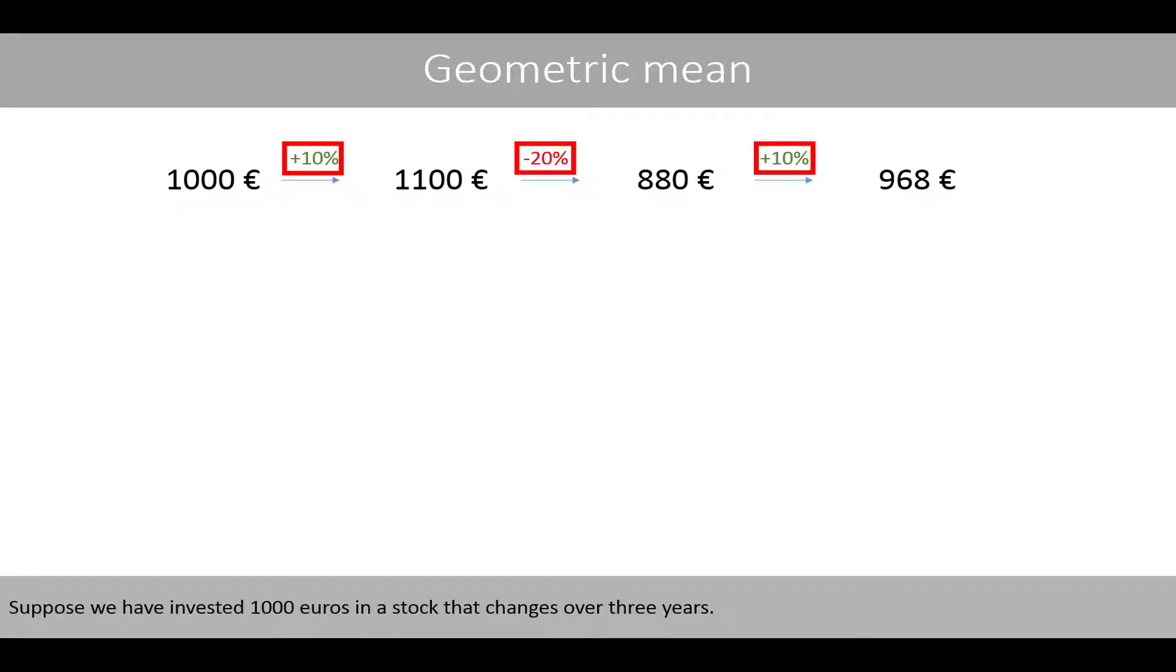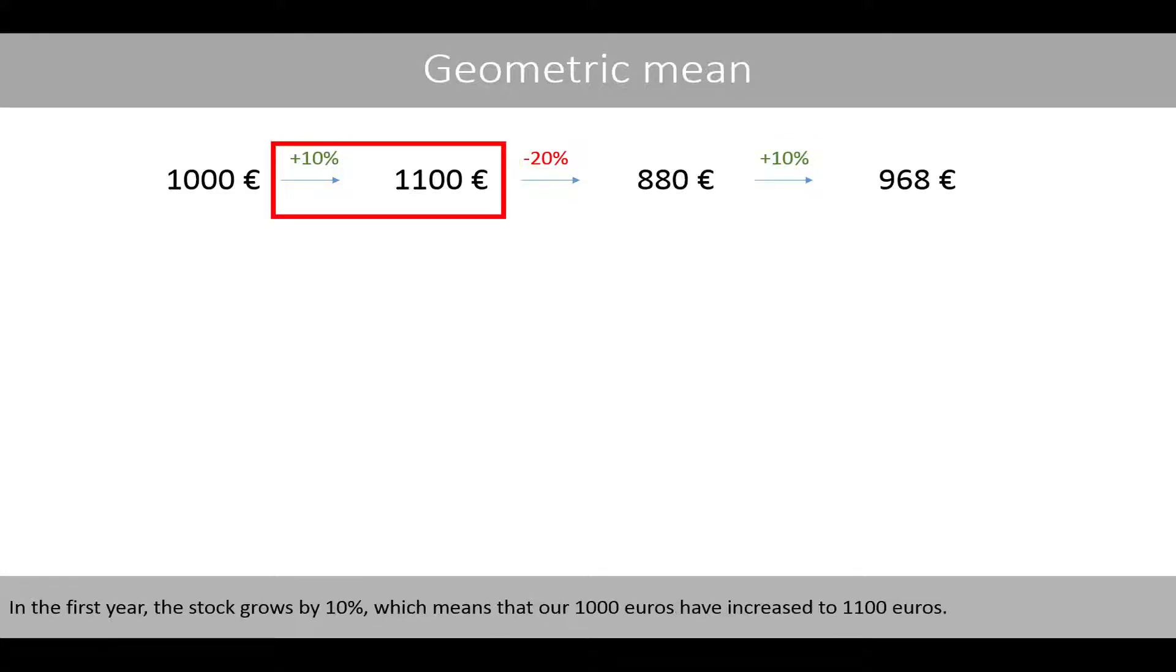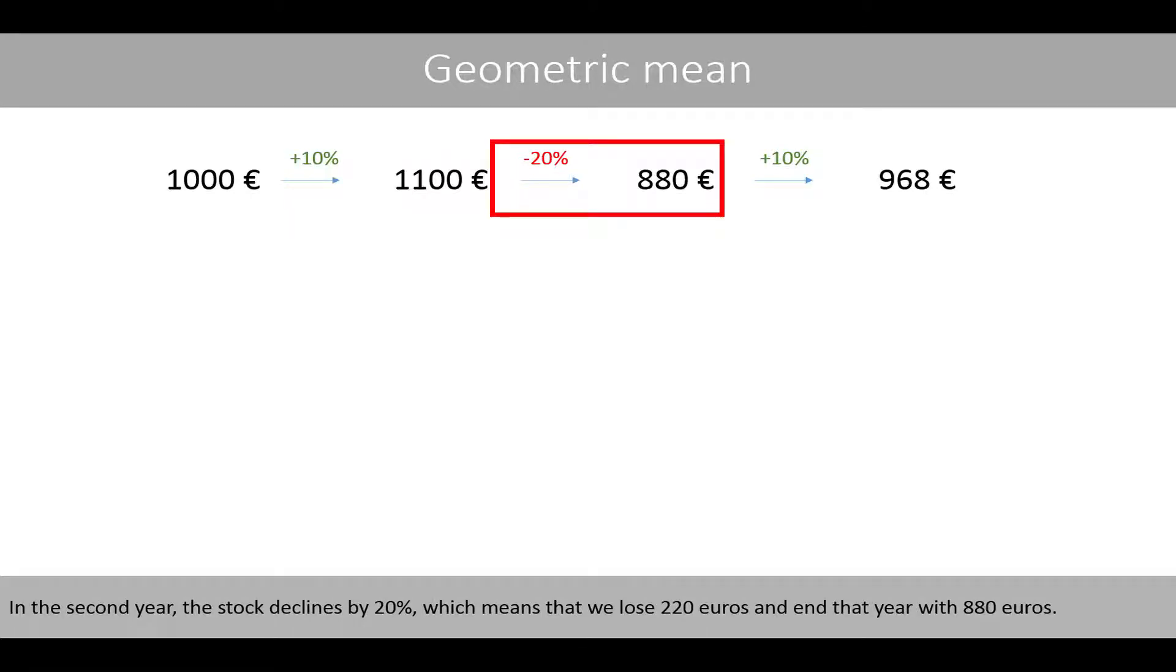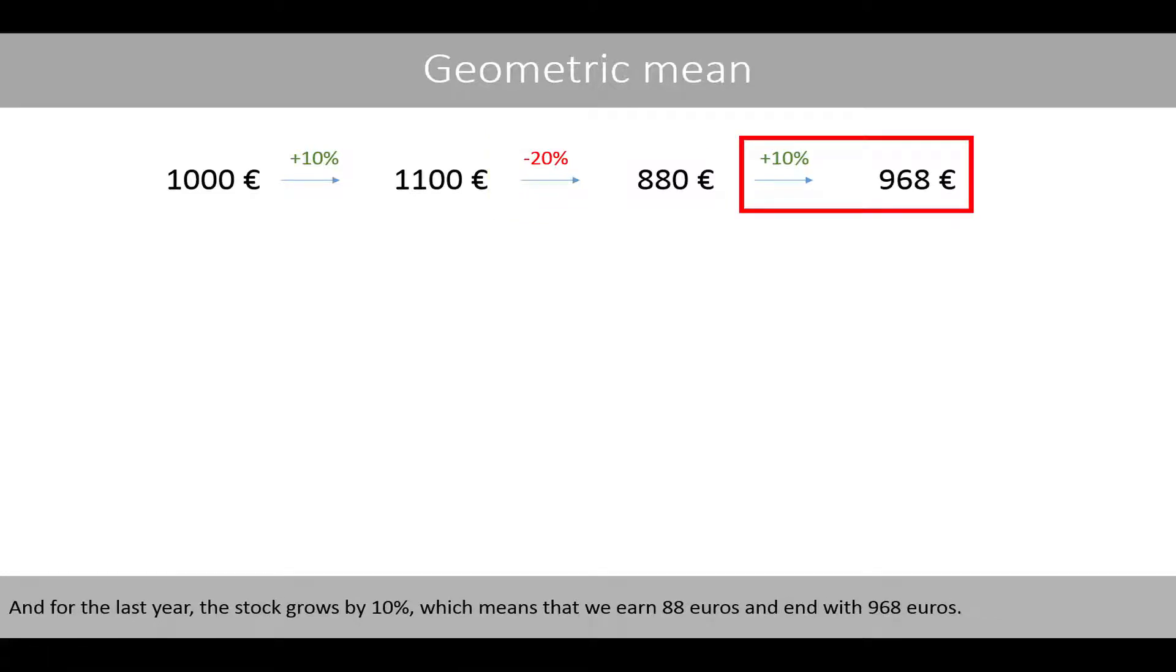Suppose we have invested 1,000 euros in a stock that changes over three years. In the first year, the stock grows by 10%, which means that our 1,000 euros have increased to 1,100 euros. In the second year, the stock declines by 20%, which means that we lose 220 euros and end that year with 880 euros. And for the last year, the stock grows by 10%, which means that we earn 88 euros and end with 968 euros.